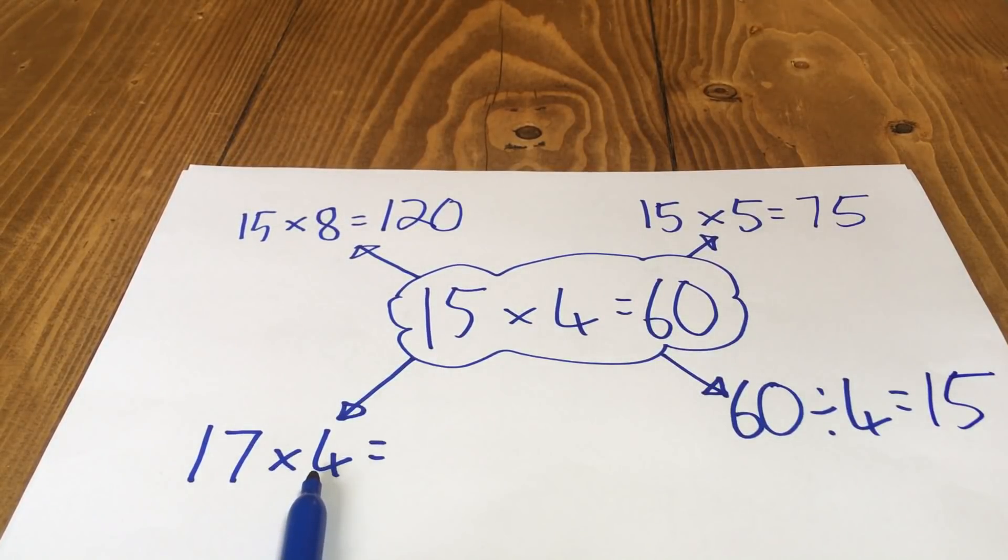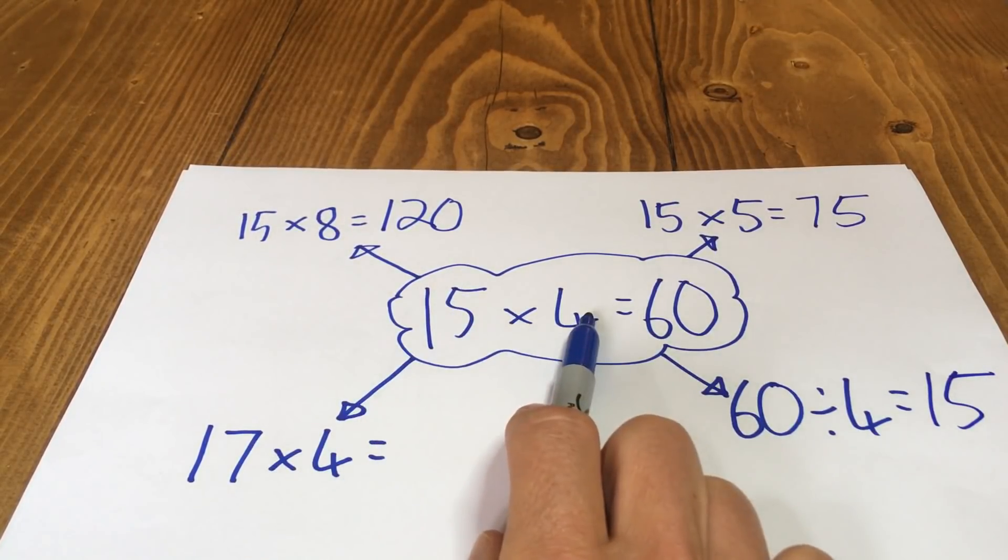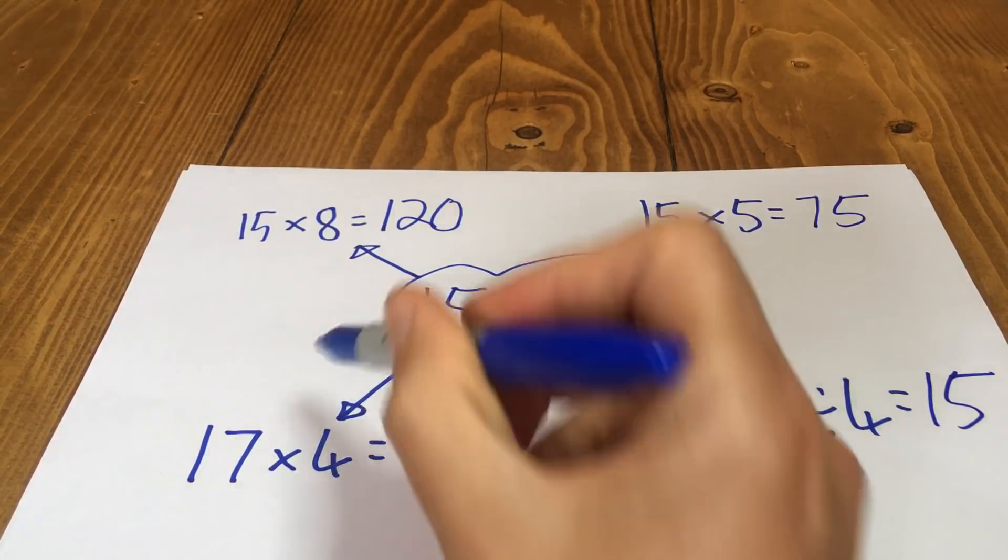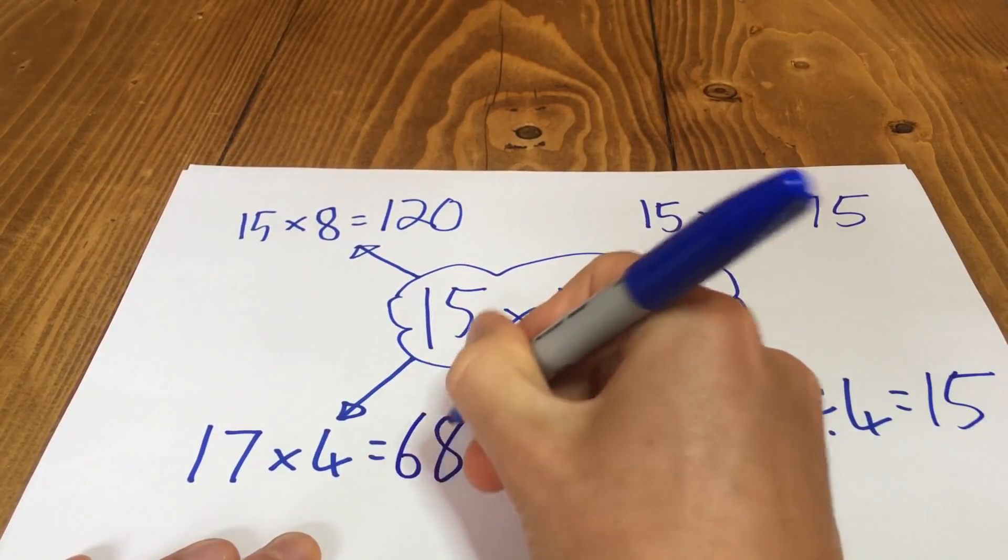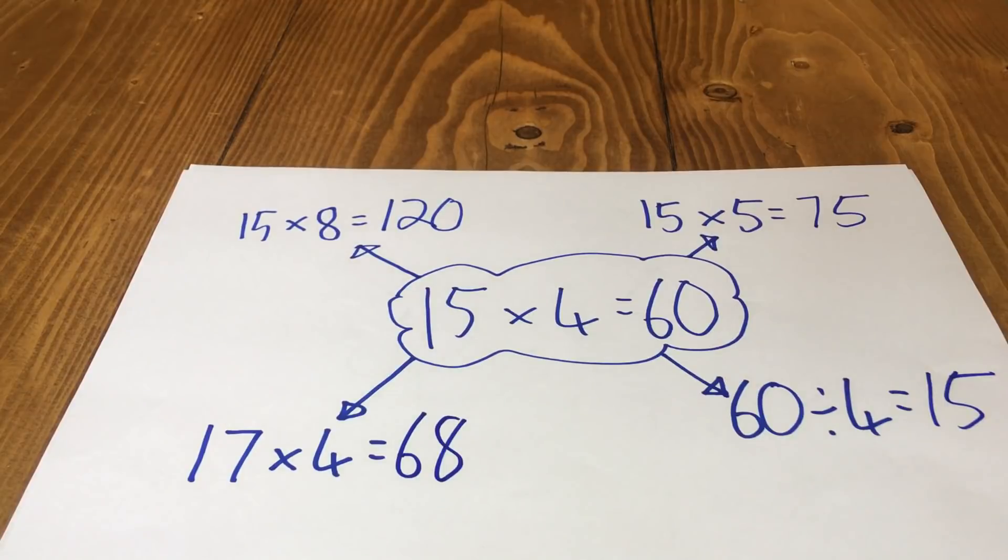And 17 lots of 4. Well, this is 15 lots of 4. So it'll be 2 more lots of 4, 68. I'm sure you came up with other examples as well.